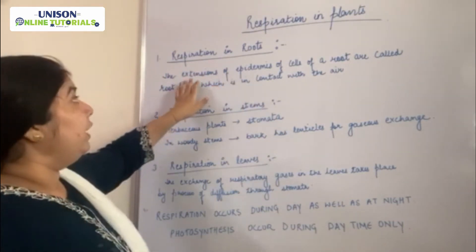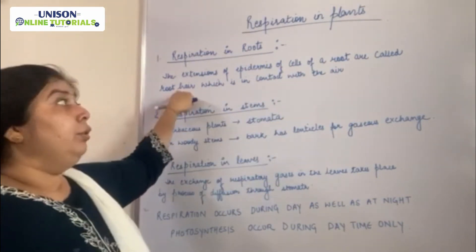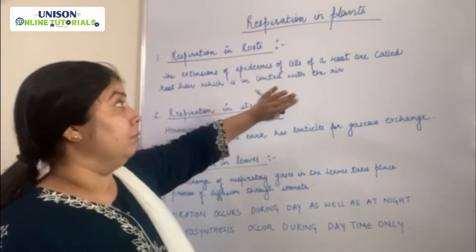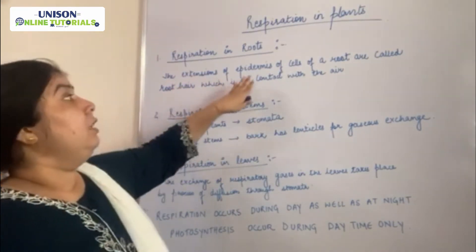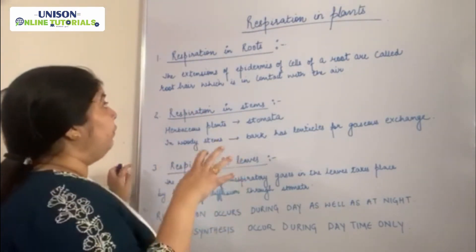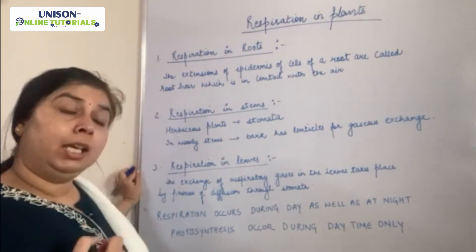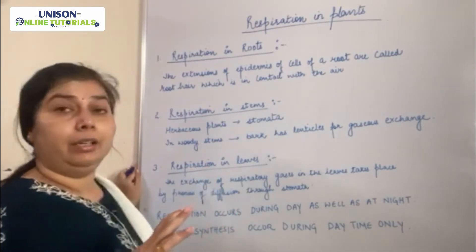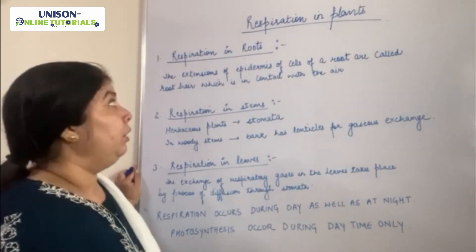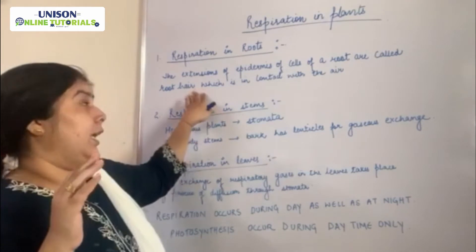In respiration in roots, we also have the extensions of the epidermis of the root cells, which are called root hairs. These root hairs are in contact with the air in the soil. Air from the soil gets diffused into the root hairs and is then transported to each and every cell. The byproduct of respiration, carbon dioxide, again diffuses out through the same root hairs.